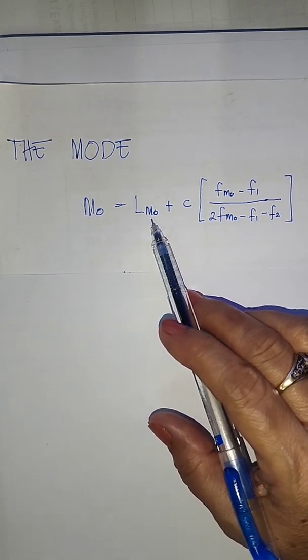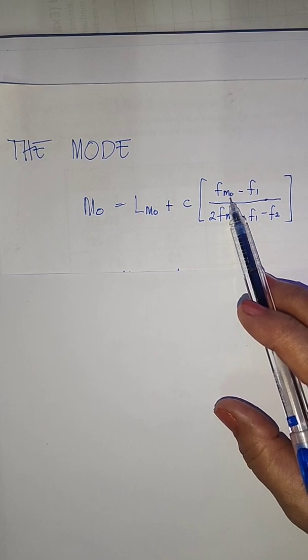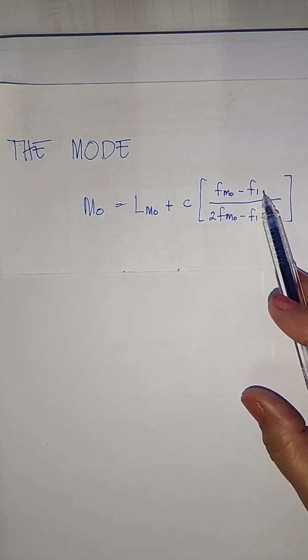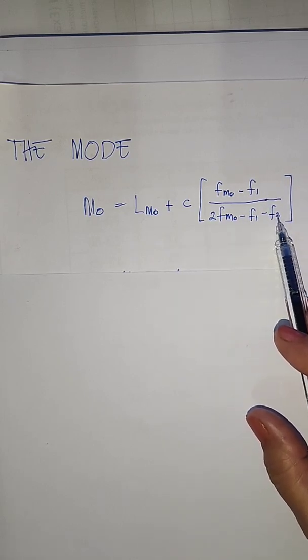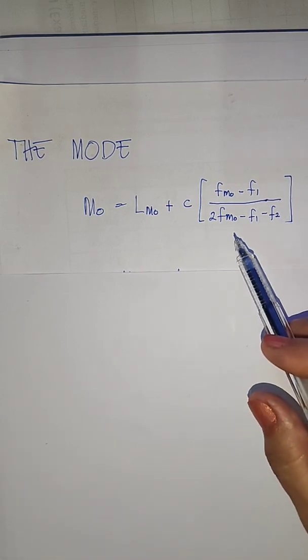So we have here the lower boundary of the modal class, the class size, the frequency of the modal class, the frequency of the class one step lower than the modal class. This F2 here is the frequency of the class one step higher than the modal class.